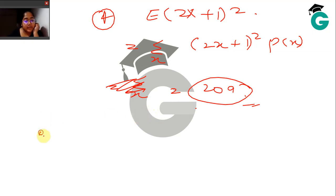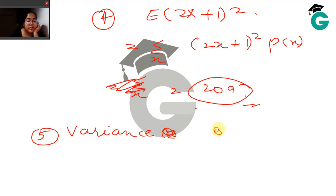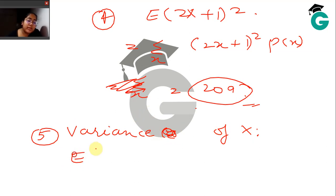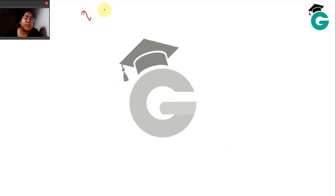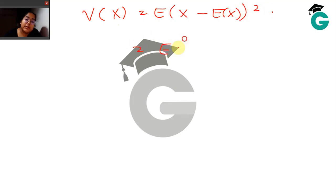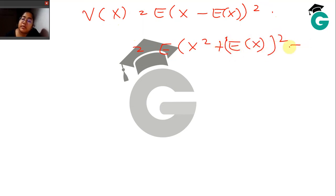The last part asks you to calculate the variance of X. Variance is defined as E[(X − E[X])²]. So V(X) = E[(X − E[X])²]. Expanding inside the bracket: E[X² + (E[X])² − 2X · E[X]].